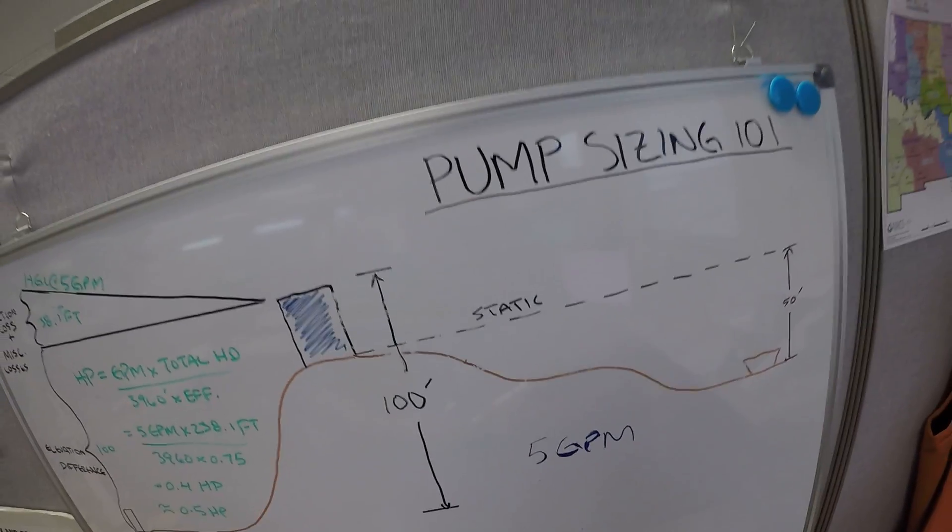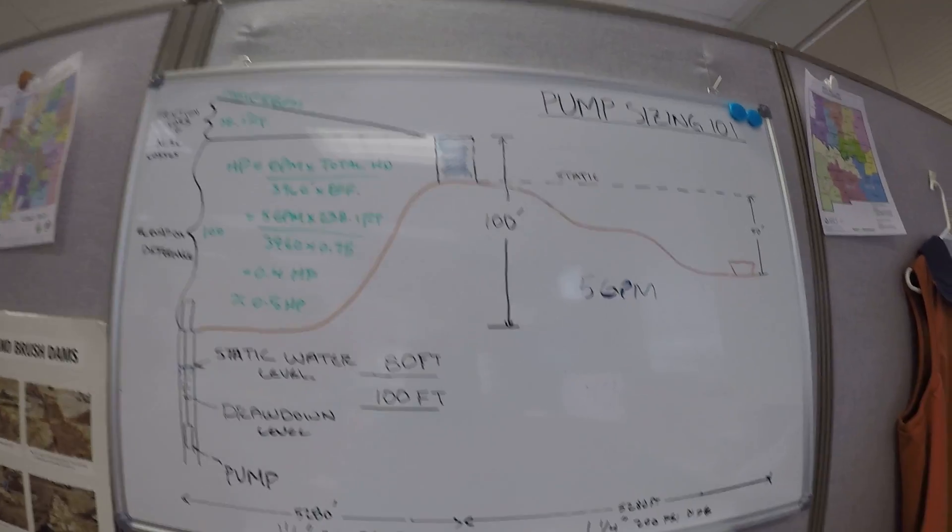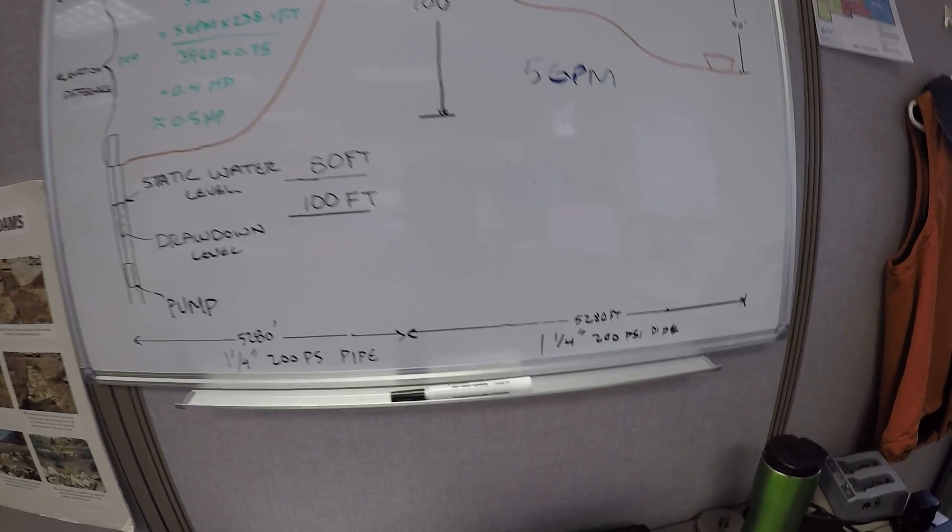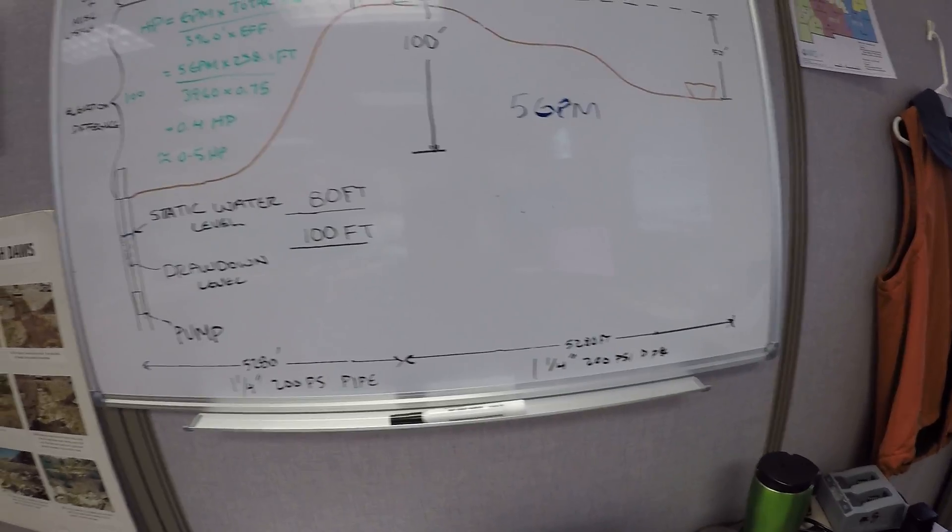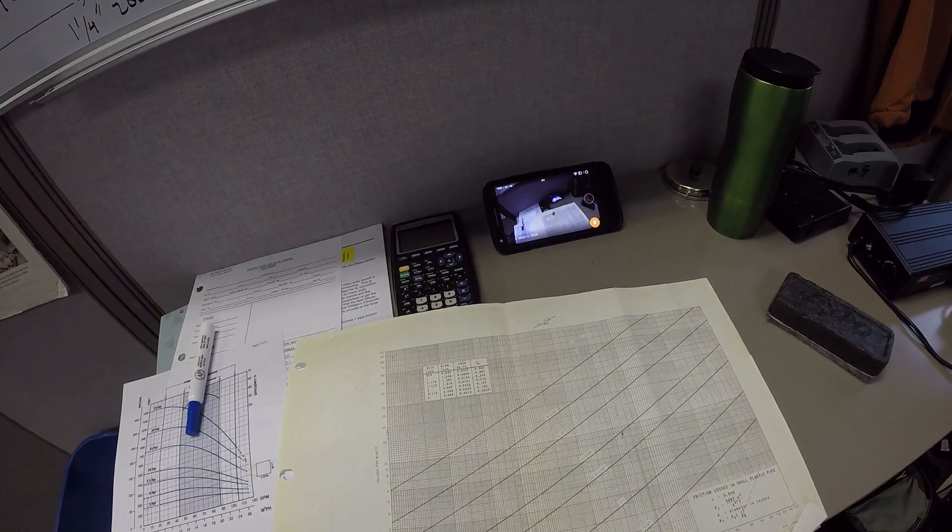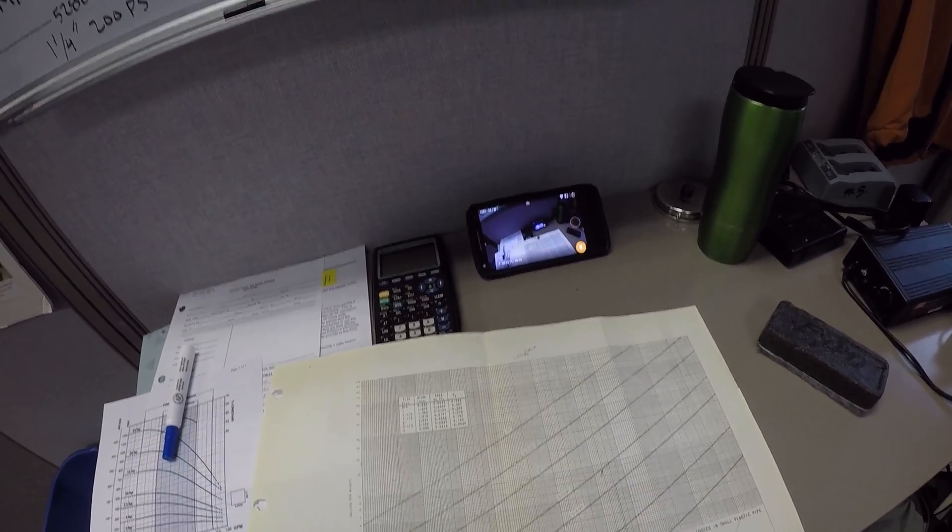So 5 GPM, and once again we're going to have to figure out our losses, and so in 5,280 feet, using our chart again, we already know that we lost 1.7 feet, or sorry, what was it again?